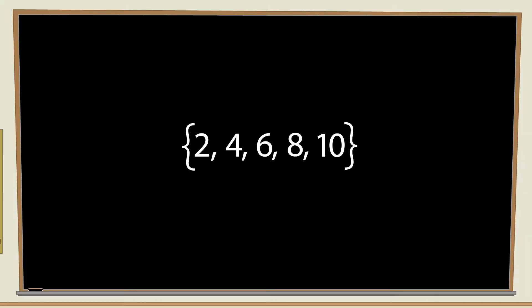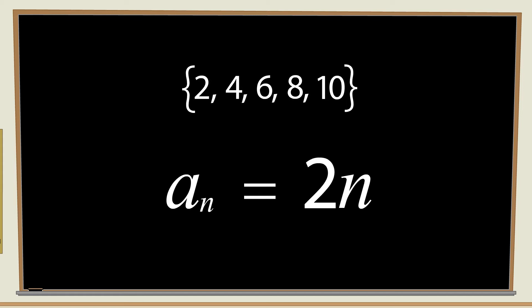So, we can specify this sequence by writing a formula. This formula says that each term, which we will call a, numbered with a little subscript n, which tells us which term in the sequence it is, is just 2 times n.